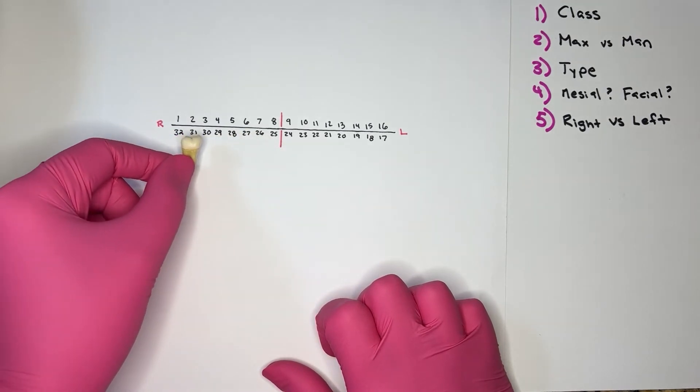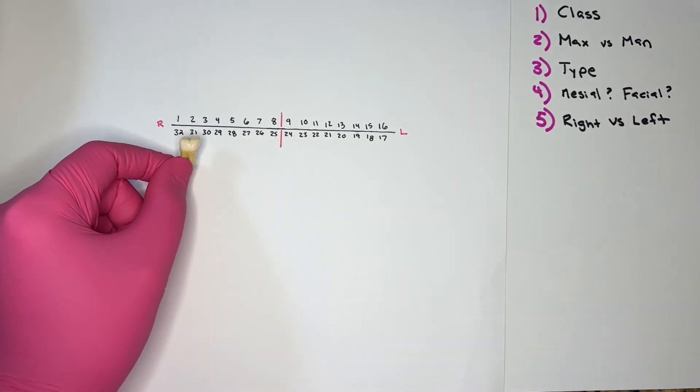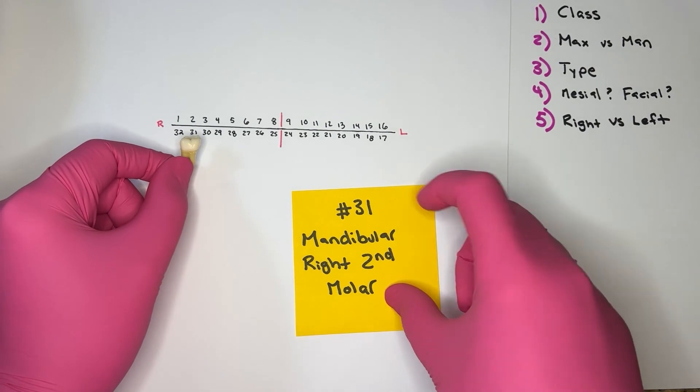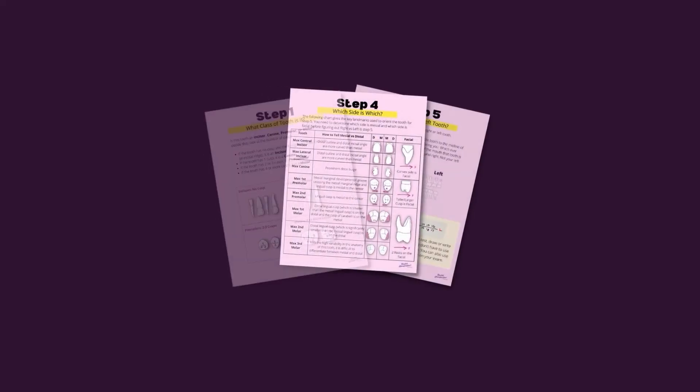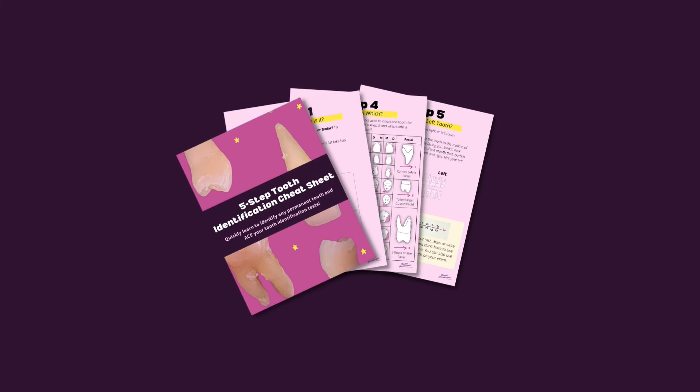We end up on the right side. If we bring ourselves to the mandibular second molar, we're specifically at number 31, the mandibular right second molar. Want a copy of the cheat sheet that goes over these five steps in great detail? Be sure to go to the description below and download my five-step tooth identification cheat sheet.